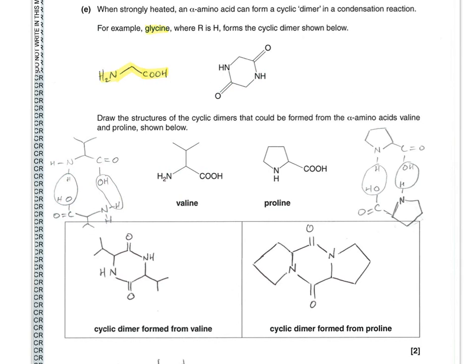Exactly the same for proline. I've drawn proline with the NH and COOH displayed, and another one alongside it the other way around. Take out the water and join the two parts together, and you would end up with this cyclic dimer.